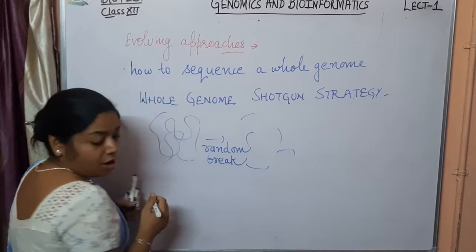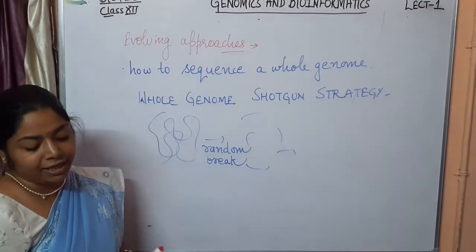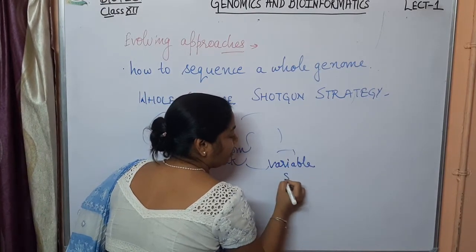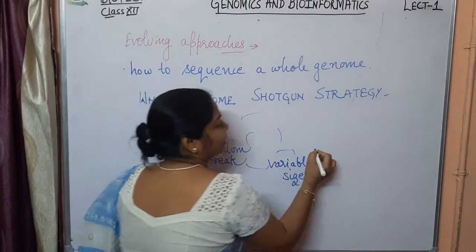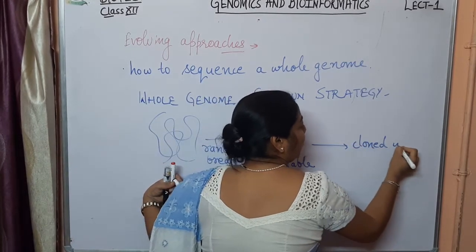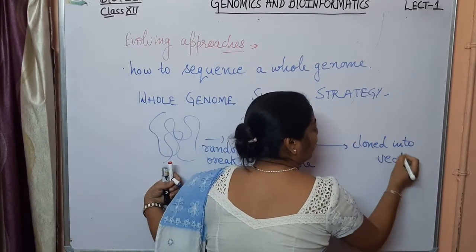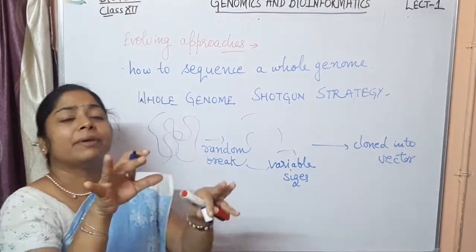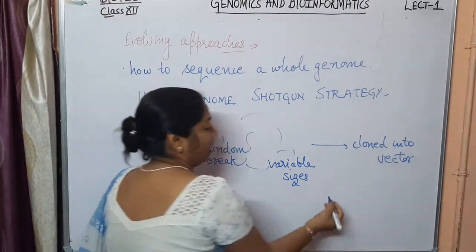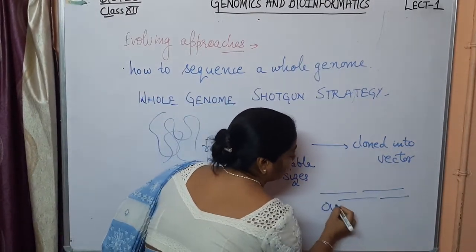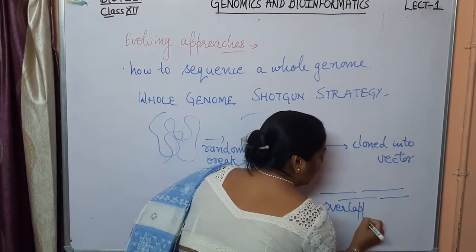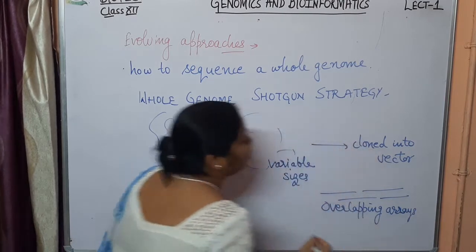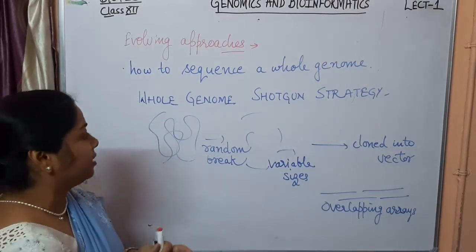In the whole genome shotgun strategy, the large genome is randomly broken into smaller fragments. These fragments are then sequenced and reassembled. The complete description of this methodology is not in our syllabus — this is just a general overview.